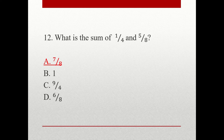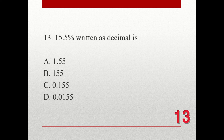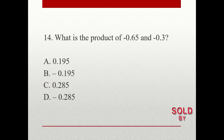Question number 13. 15.5% written as decimal is: A. 1.55. B. 155. C. 0.155. D. 0.0155. The correct answer is C. 0.155.